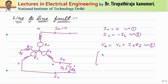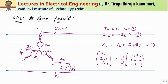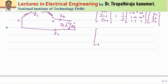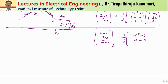We know the sequence components can be written in terms of the phase components as Ia1, Ia2 and Ia0. This can be obtained as A inverse, which is 1/3 times the matrix [1, α², α; 1, α, α²; 1, 1, 1], where α is 1 at an angle of 120 degrees, multiplied by Ia, Ib, Ic. We already know Ia is equal to 0 and Ic is equal to minus Ib, so I can substitute those values.